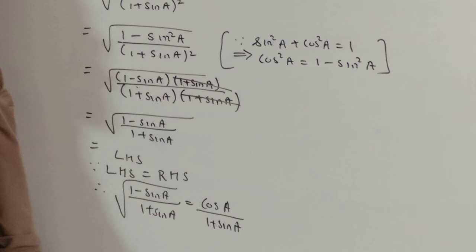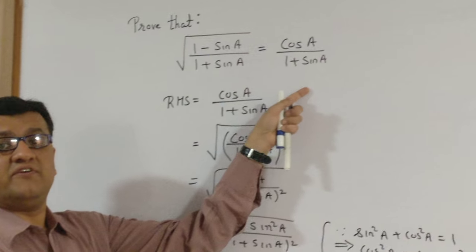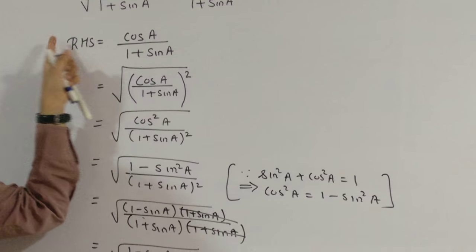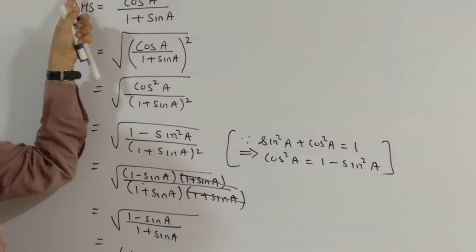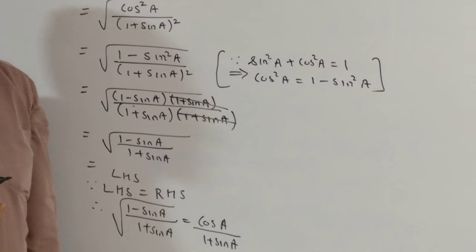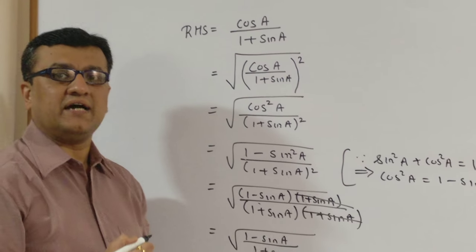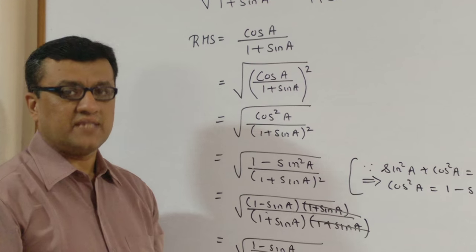So we have solved this particular sum all together in a different way. Instead of going from LHS to RHS, we have rather gone from RHS to LHS, so that we do not have any problem whether to go with what kind of conjugate, whether to go with plus or minus. This is a totally new different way to solve these kind of trigonometric identities.